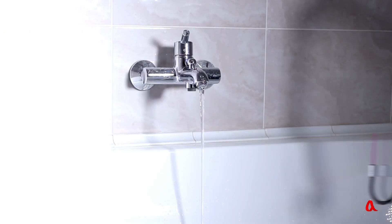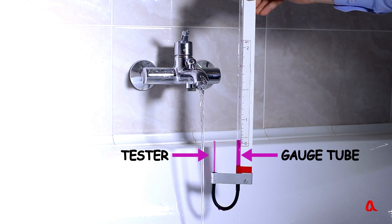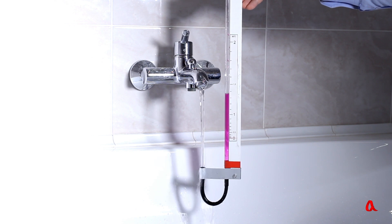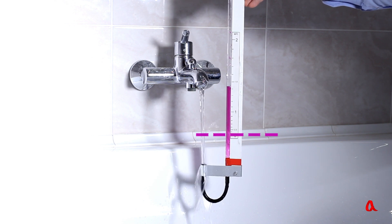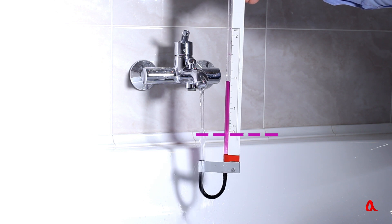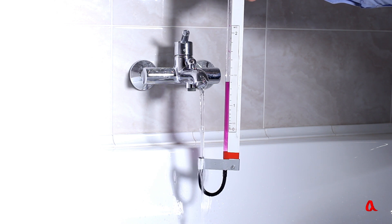Let's measure the speed of water flowing out of a tap using Pitot's method. We use a glass gauge tube, connecting it to another thin tube — a tester — through a bend. We put the tester into the water flow and see that the water level in the gauge tube rises above the edge of the tester. Knowing the difference in levels, one can determine the speed of water right away. That's why the scale of the device is marked off in meters per second.